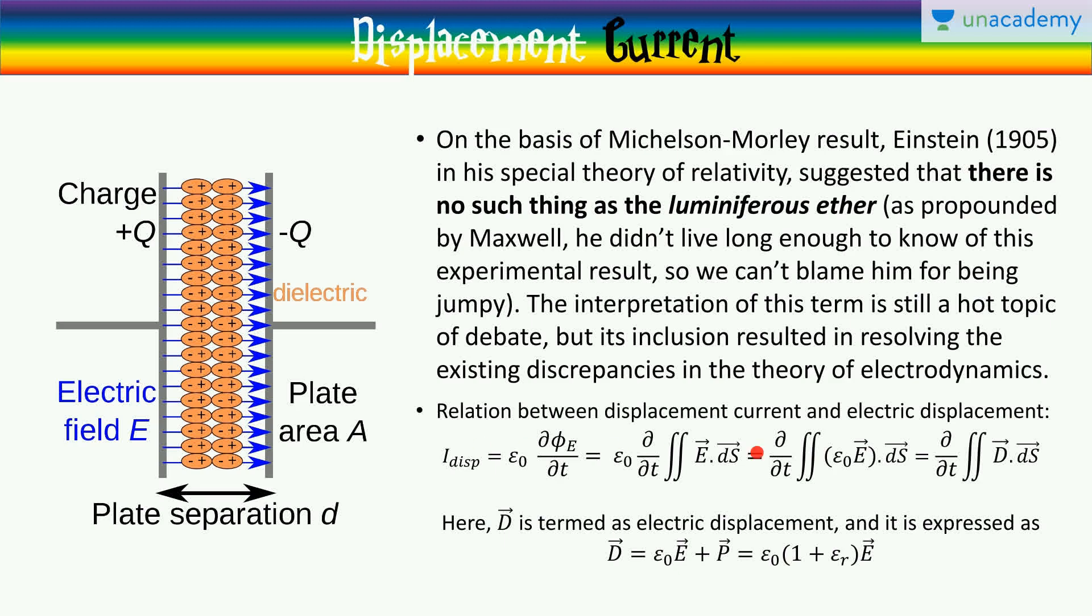The relation between electric displacement current and the electric displacement is given by this equation here. The electric displacement given by this equation seen earlier is also represented as this equation shown here, where the epsilon is just taken inside. This epsilon naught E, in the case of vacuum being the medium, is the electric displacement.